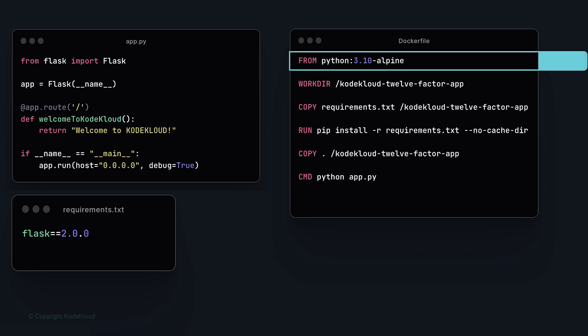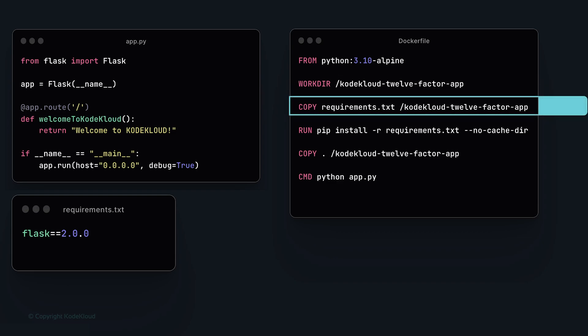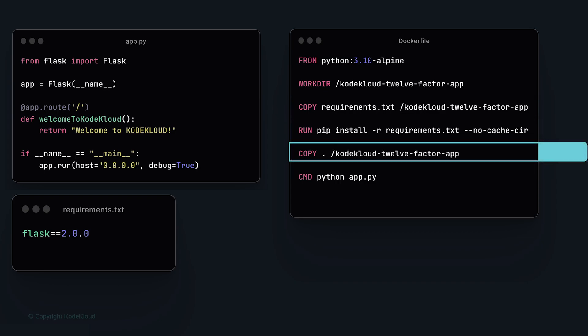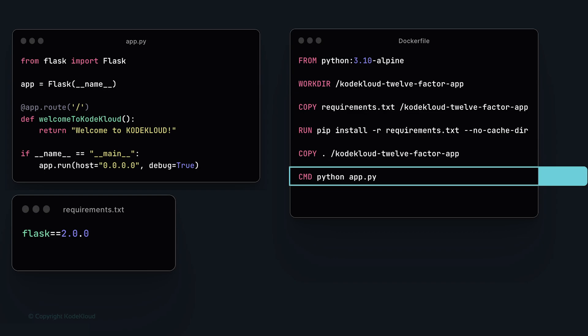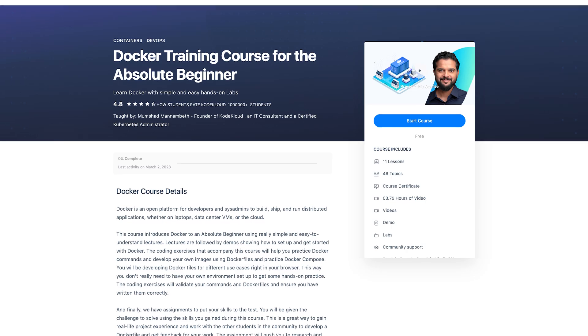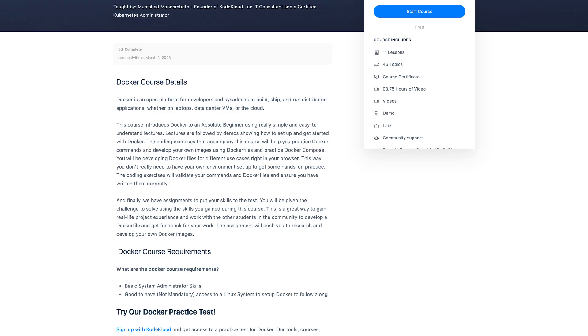The Dockerfile creates an image from a Python-based image, sets the working directory, copies `requirements.txt`, installs the dependencies, copies the application code into the image, and defines the run command using the `CMD` instruction. Running `docker build` builds the image, and `docker run` runs one instance of the application. If you're new to Docker, check out the free Docker for Beginners course on CodeCloud using the links below.